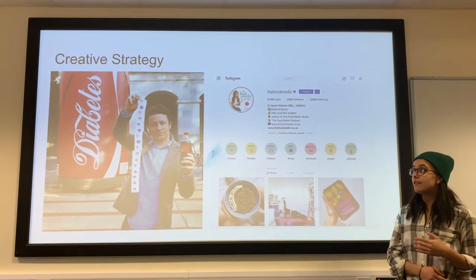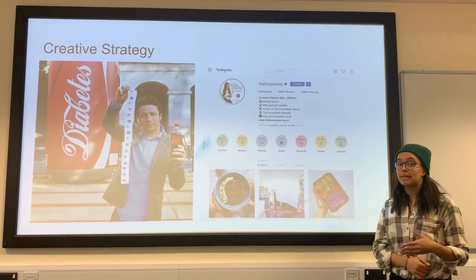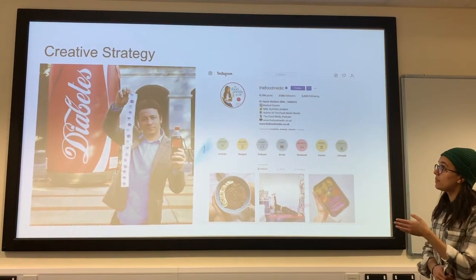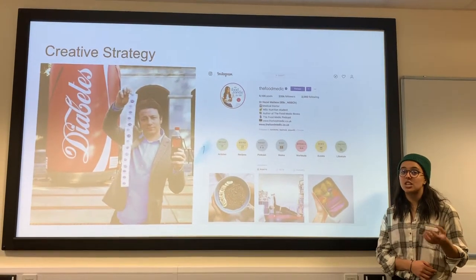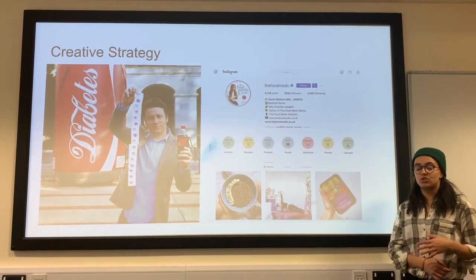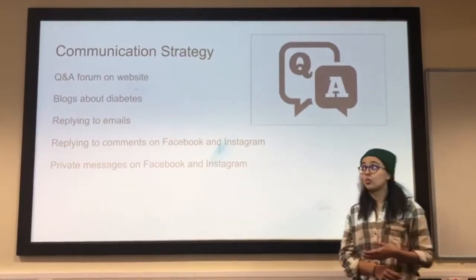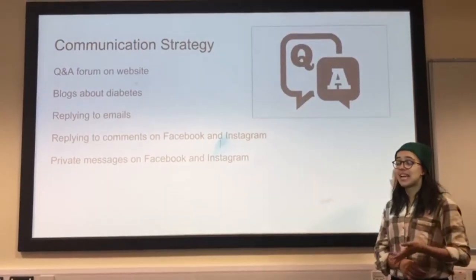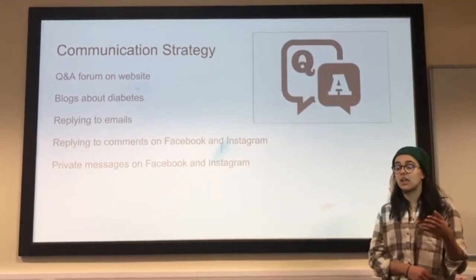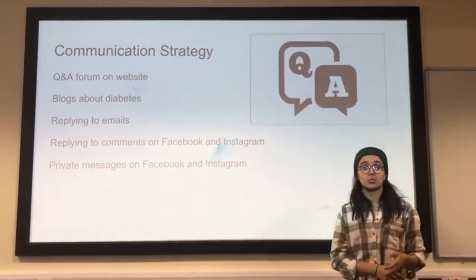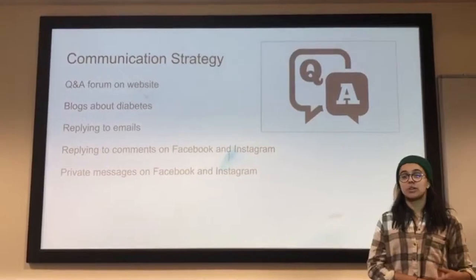Our creative strategy involves collaboration with influencers. The first is Jamie Oliver, who previously did an advertisement about diabetes, so we believe he would be willing to collaborate again. The second is the Instagram influencer Food Magic, who has around 335k followers and focuses on nutrition and health, with strong knowledge of diabetes. Our communication strategy includes a Q&A forum on our website, blogs about diabetes and health, replying to emails and comments on Facebook and Instagram, and answering through private messaging on Facebook and Instagram.